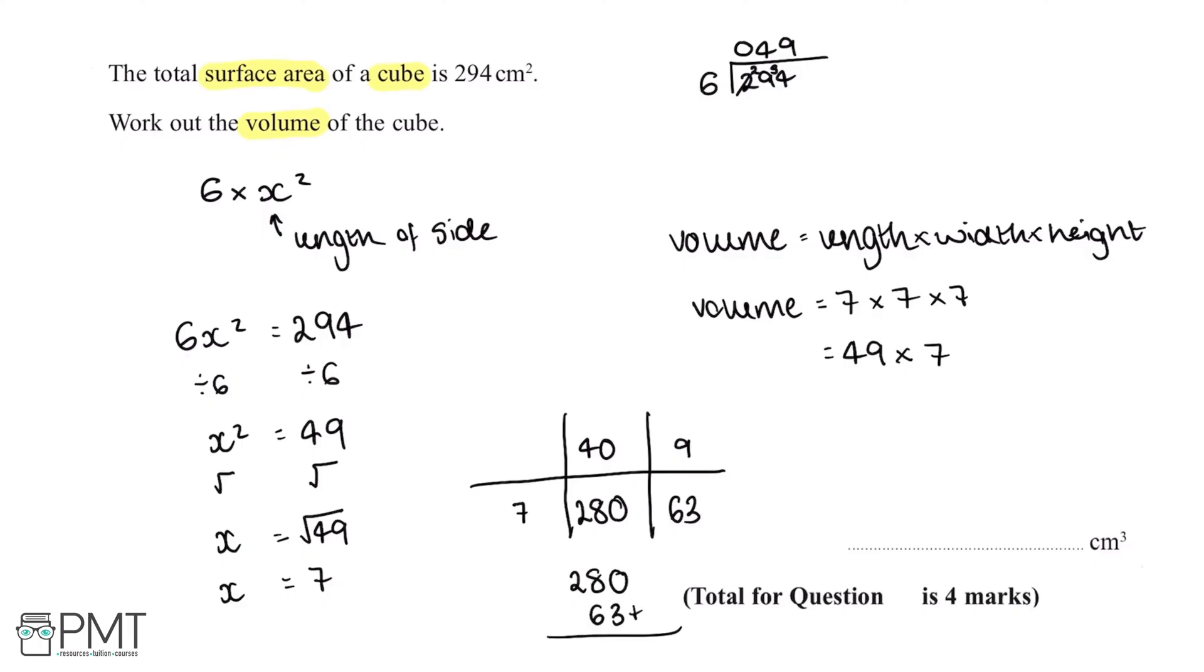0 add 3 gives us 3. 8 add 6 gives us 14. We'll carry the 1 over. 2 add 1 gives us 3, so 343. That means the volume is equal to 343 centimeters cubed.